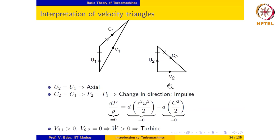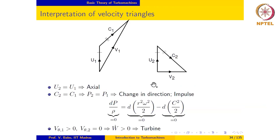Whether it is an impulse work-absorbing or work-producing machine may be determined by looking at the tangential component of the absolute velocity. Notice that vθ1 is positive and vθ2 is 0 because V2 is perpendicular to U2. From Euler's turbine equation, the specific work ẇ is positive, so this is an axial impulse turbine. This discussion makes clear how much information can be associated with velocity triangles between the inlet and outlet of a rotor.